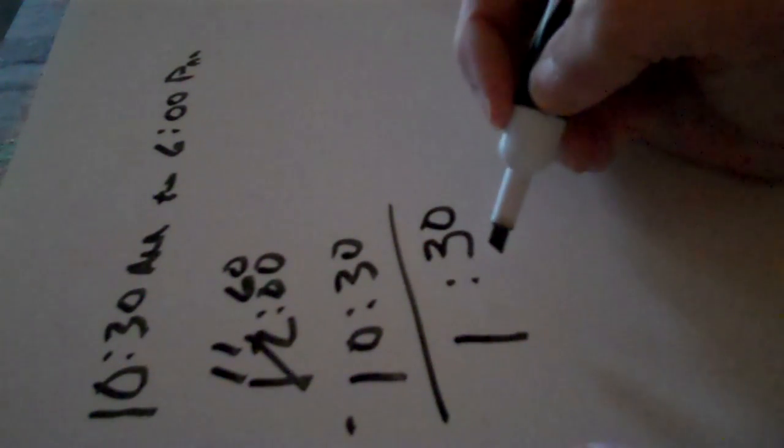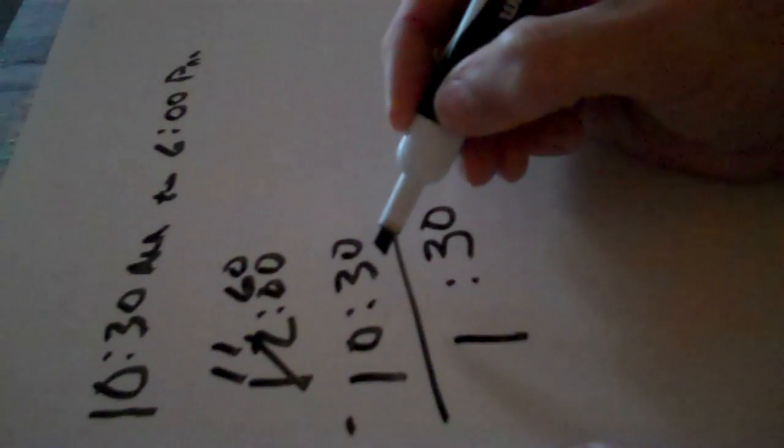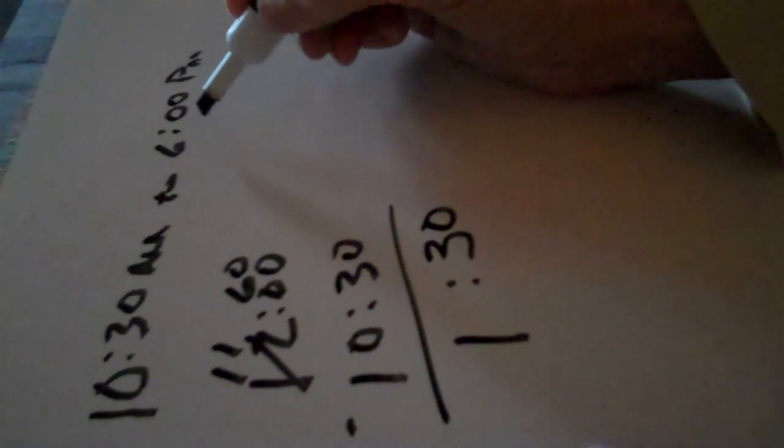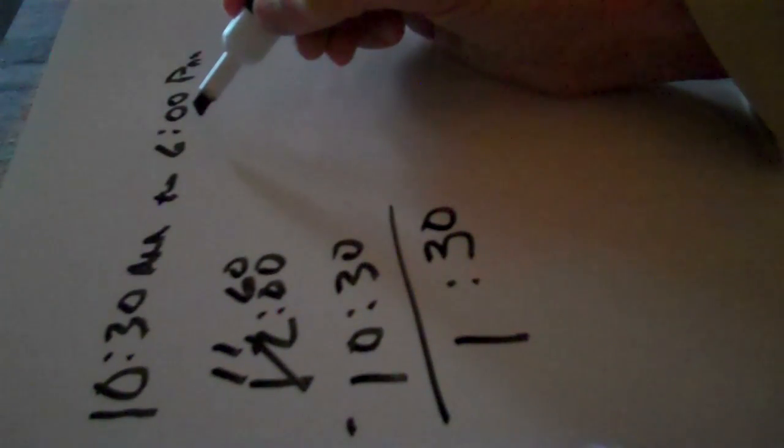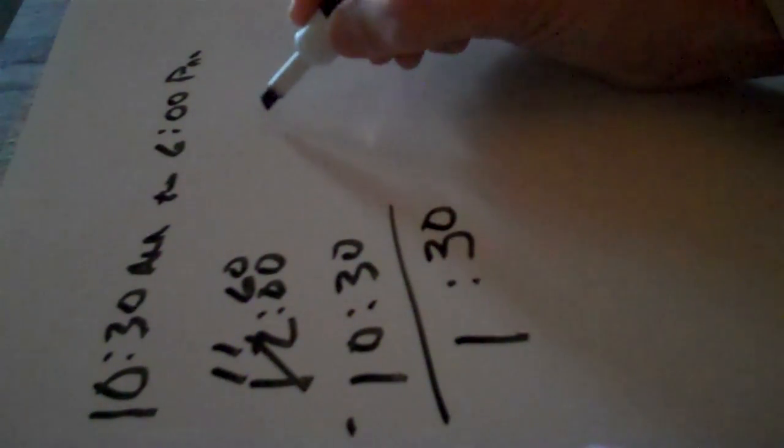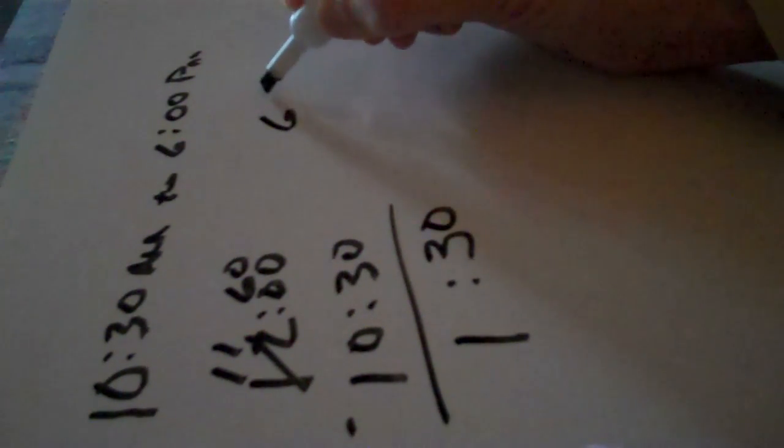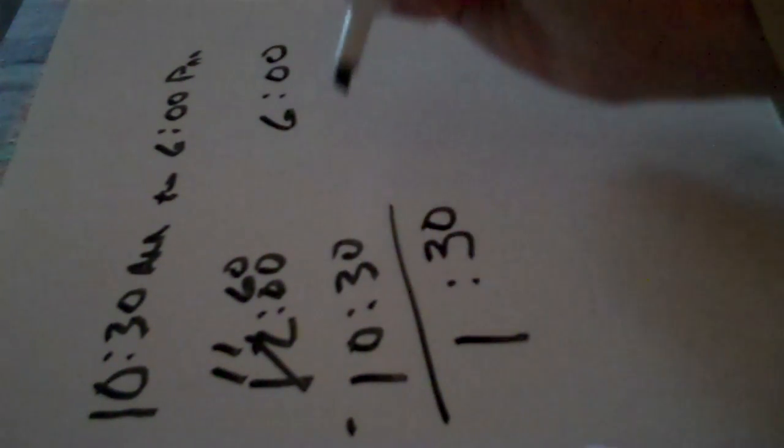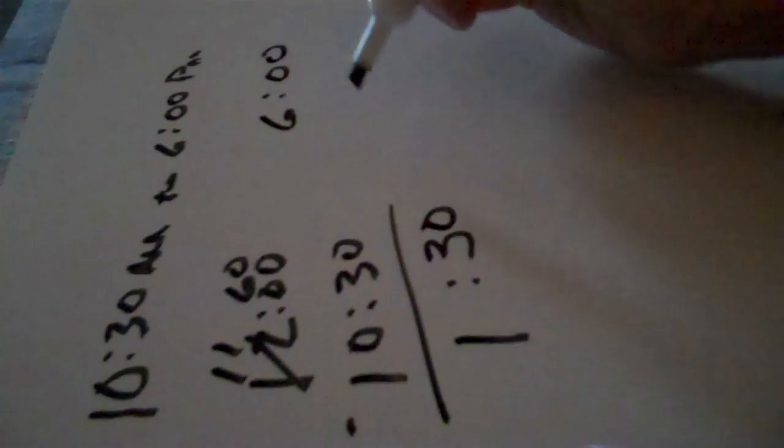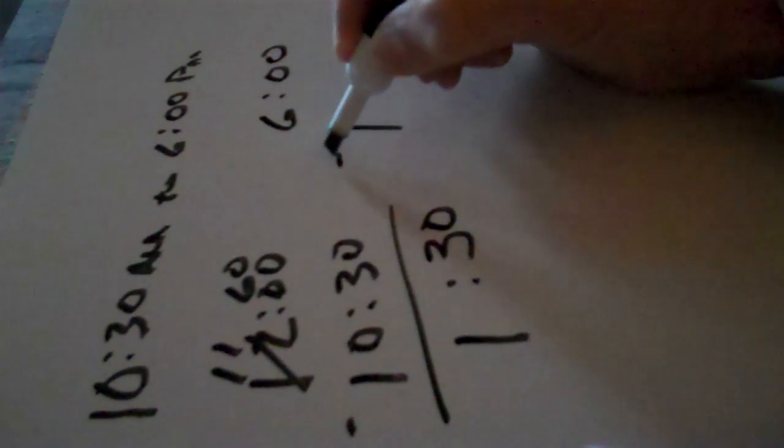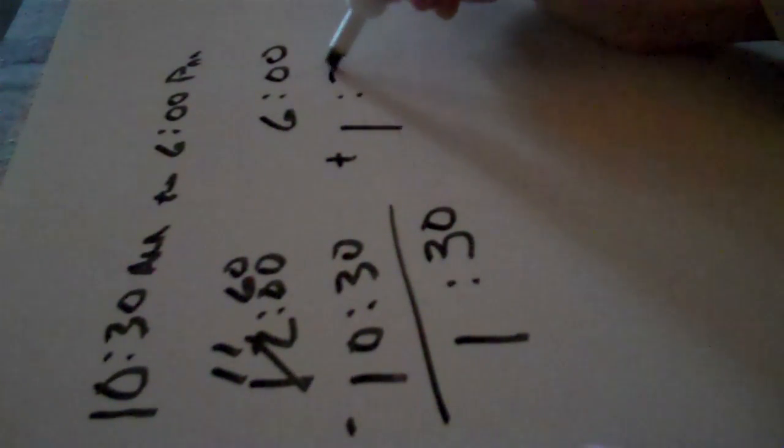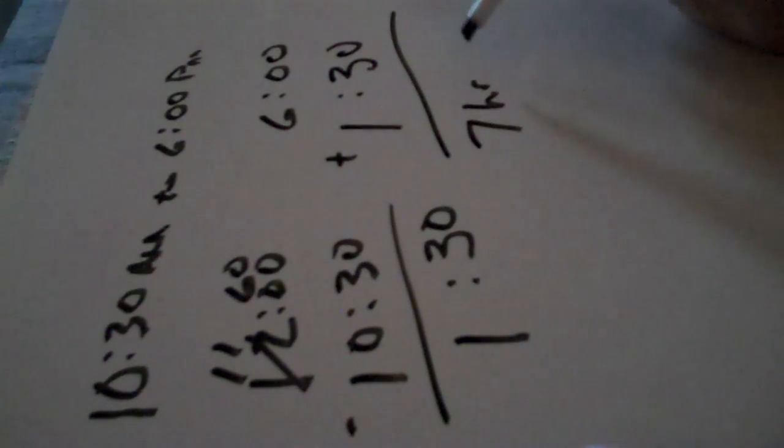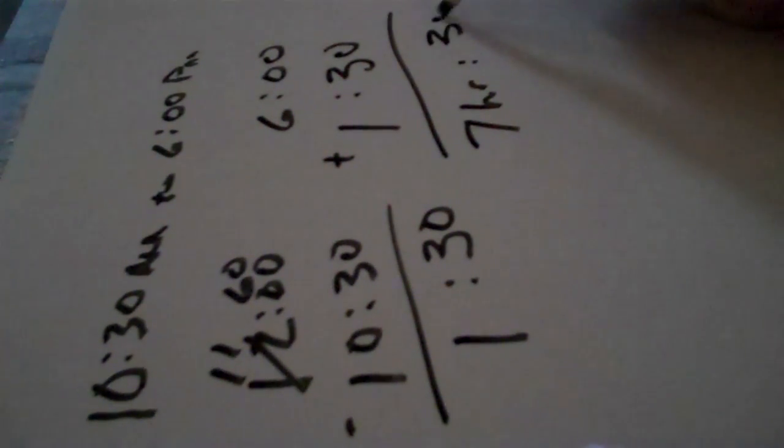So there's one hour and 30 minutes from 10:30 to noon, and all I have to do is add that to the 6 o'clock, because I know that there is 6 hours between 12 o'clock PM and 6 o'clock PM. So I just add in the hour and 30 minutes, and I come up with 7 hours and 30 minutes.